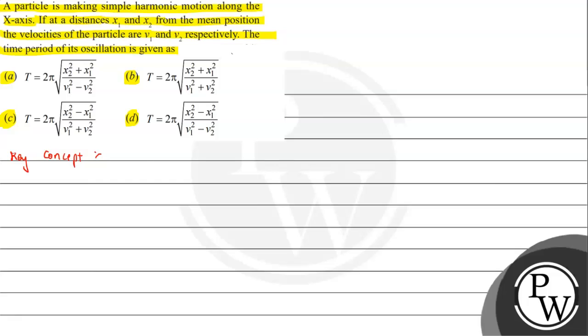There are three important equations regarding a particle performing SHM. First, displacement is given as x = A sin(ωt + φ). If we differentiate this, we get the velocity expression.